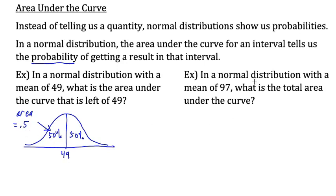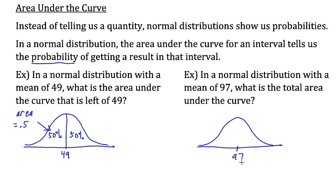Here's another one. In a normal distribution with a mean of 97, what is the total area under the curve? Here's our normal distribution with a mean of 97. Now 100% of the data is under this curve, so the area under the curve equals 1, because 100% equals 1.